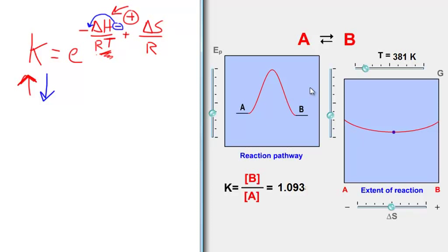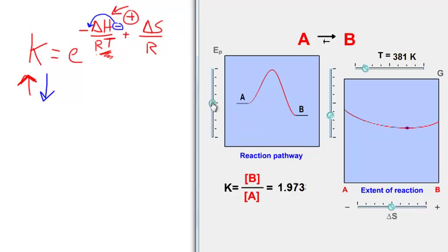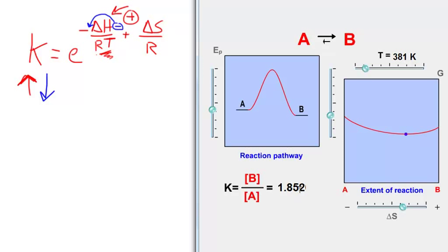Let's go over and look at this hypothetical reaction of A goes to B — a simple process. I have a reaction pathway diagram that I can control with my simulation, where I can control the relative potential energy of my reactant to my product. Over here I have a slider on this graph, which is a plot of free energy versus extent. Here I can control the delta S for the process. The equilibrium constant in this case is the concentration of B over A.